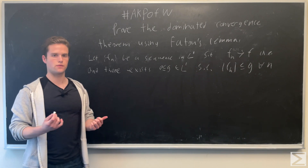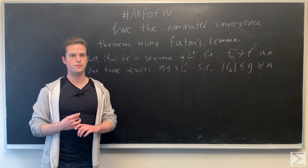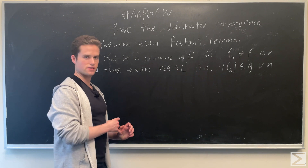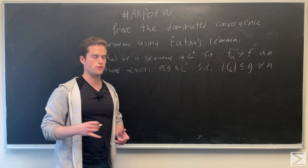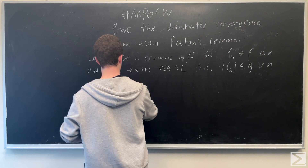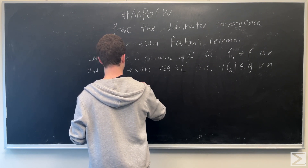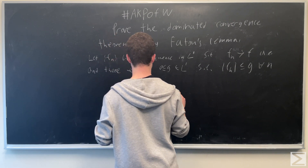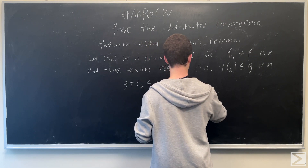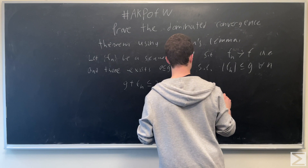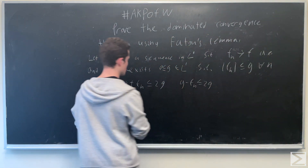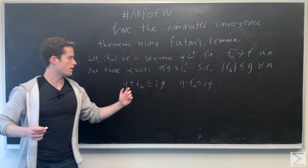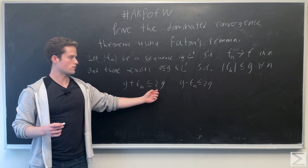To do this, we're going to use Fatou's Lemma. We're going to consider fn plus or minus this g function, or g plus or minus fn. From the absolute value of fn being less than or equal to g, we have g plus or minus fn is going to be less than or equal to 2g, which is in L1.